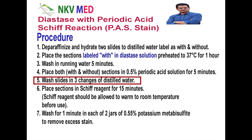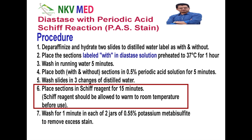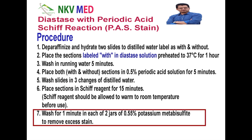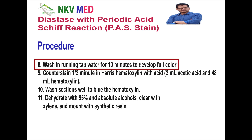After that, we will wash in distilled water with 3 changes. In the next step, we will put the Schiff reagent for 15 minutes. According to the principle, the Schiff reagent will bind with the aldehyde groups exposed by the periodic acid solution. Then we will wash for 1 minute with metabisulphite. The metabisulphite removes the excess Schiff reagent from the section. After the potassium metabisulphite solution, we will wash in running tap water for 10 minutes to develop the color.